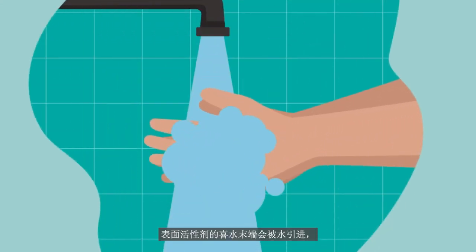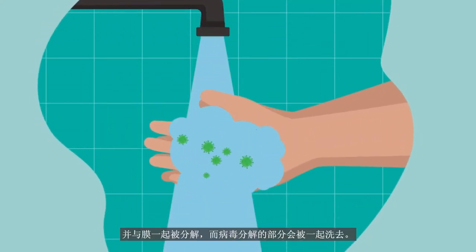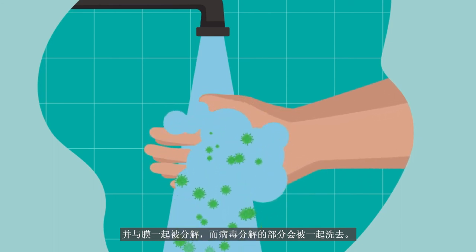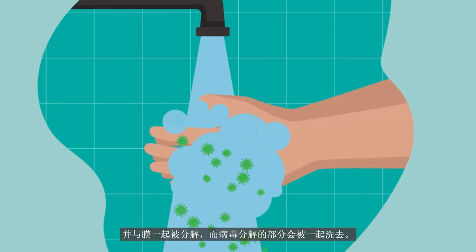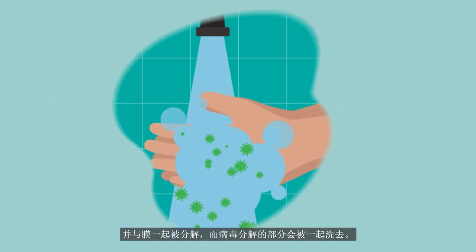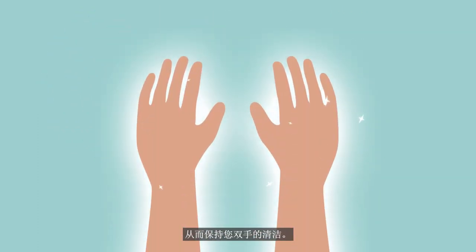The surfactant removes the membrane of the virus and breaks it down. The water-loving ends of the surfactant are attracted to water, and together with the membrane and broken down parts of the virus, are washed away from your hands, thus keeping your hands clean.